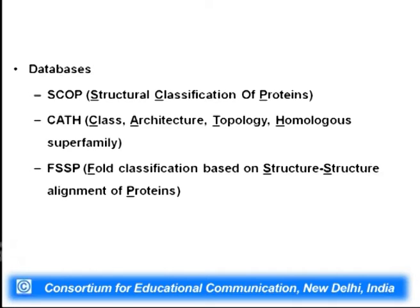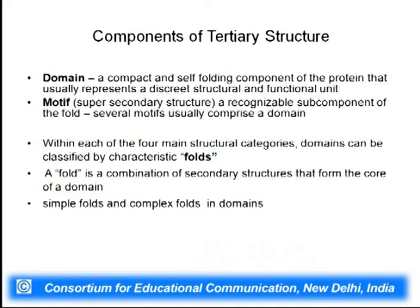There are three major databases based on the Protein Data Bank: SCOP (Structural Classification of Proteins), CATH (Class, Architecture, Topology, Homology) and superfamily, and FSSP (Fold Classification based on Structure-Structure alignment of Proteins). These are components of tertiary structure classification. Motif is a structural or topological unit and a very recognizable fold, while domain is a compact, self-folding component of protein representing a discrete structural and functional unit.